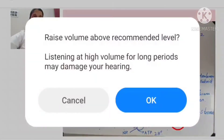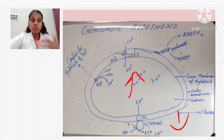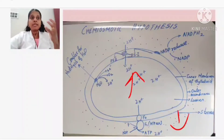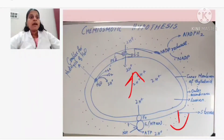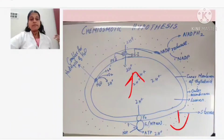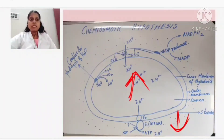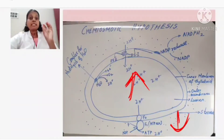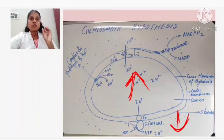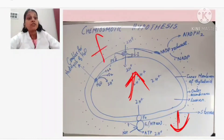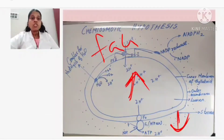When hydrogen concentration keeps increasing inside the lumen and is less outside, there exists a concentration gradient - high concentration inside, low outside. So hydrogen ions will move from high concentration inside to low concentration outside. This does not happen by simple diffusion alone.